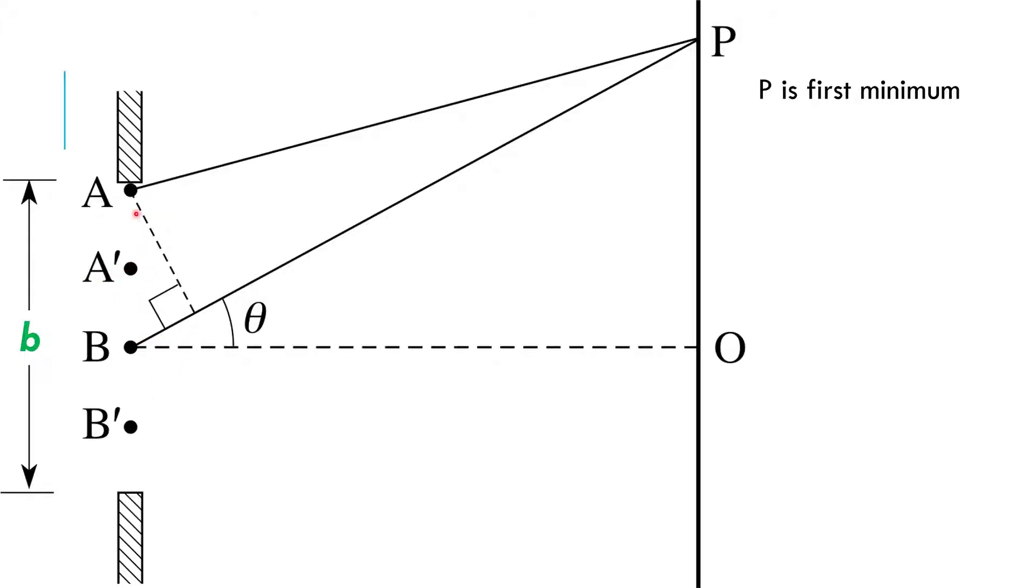And there is like an A double prime right here and a B double prime right here, and they cancel out.